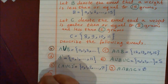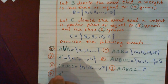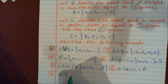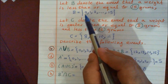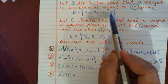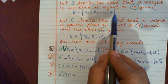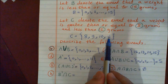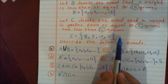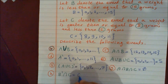Question H asks for B' ∩ C. B is from 0 to 15, so B' (complement of B) is from 16 to infinity. C is from 8 to 11, which doesn't even reach 15. There is no intersection between B' and C, so B' ∩ C = ∅.